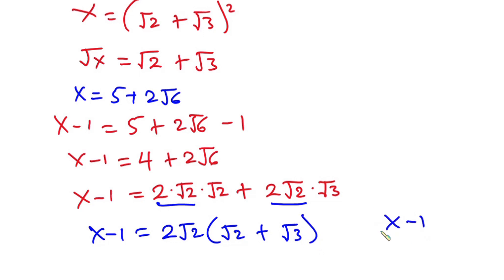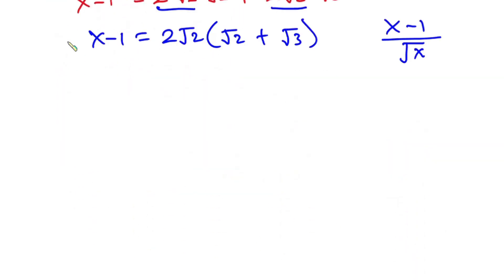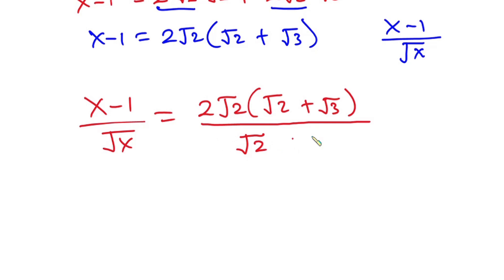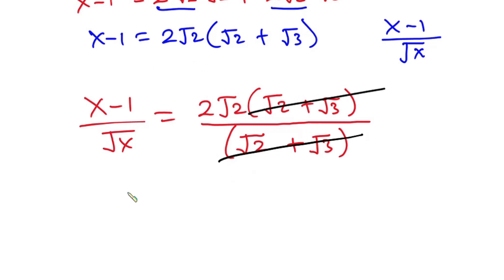Now we have to find (x minus 1) over √x. We know x minus 1 = 2√2(√2 + √3) and √x = √2 + √3. So (x-1)/√x = 2√2(√2 + √3) divided by (√2 + √3). The (√2 + √3) terms cancel, leaving us with (x-1)/√x = 2√2.